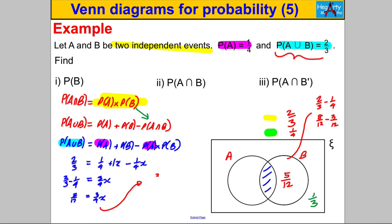Solving for x: three-quarters·x = five-twelfths, so x = five-twelfths ÷ three-quarters = five-twelfths × four-thirds. Cancelling a factor of four gives five-ninths. So P(B) = five-ninths.